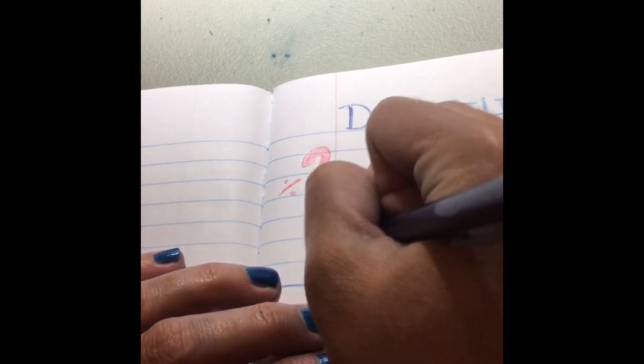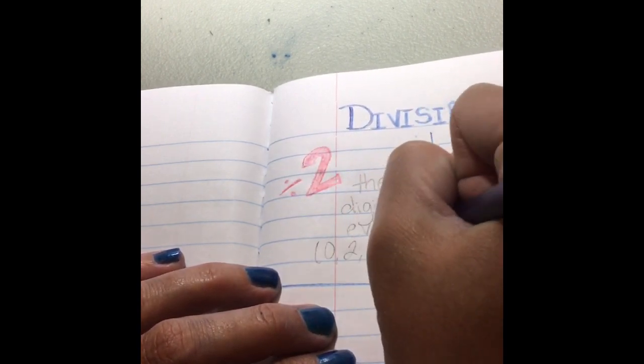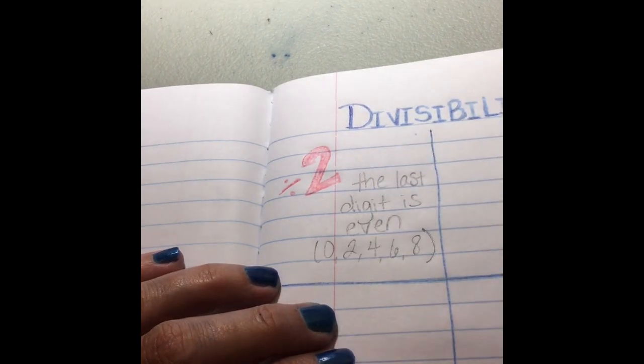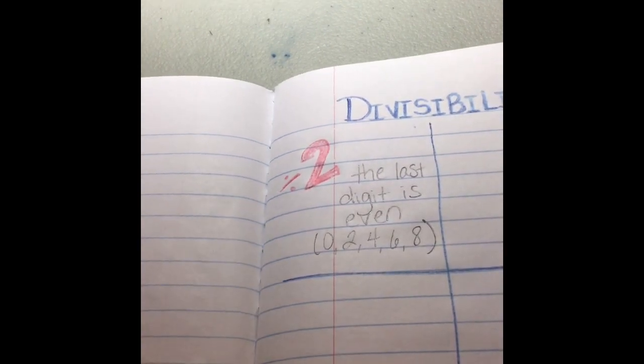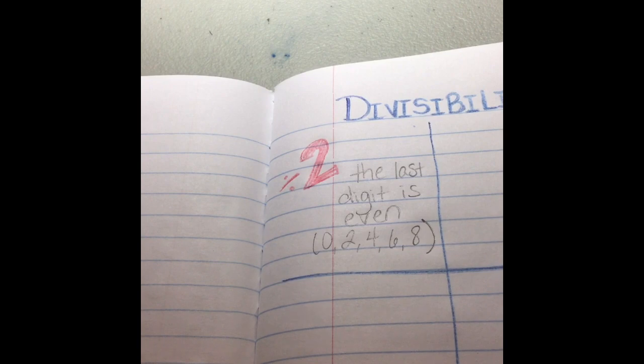Or is it zero, two, four, six, or eight? It's divisible by two if the last digit is even.